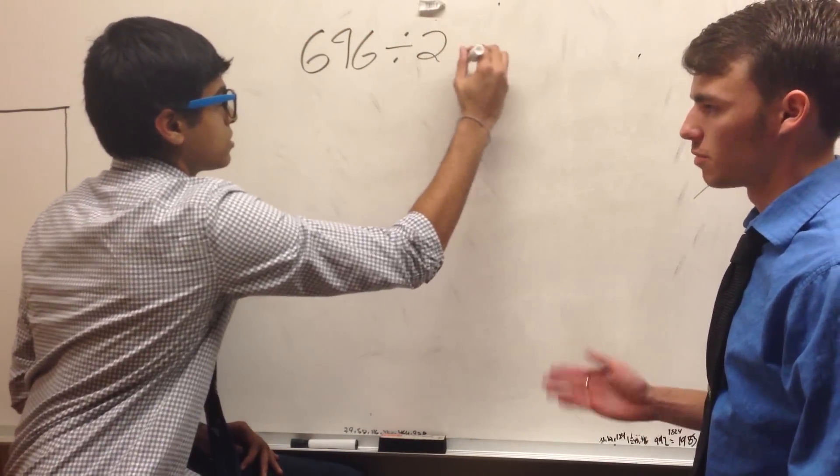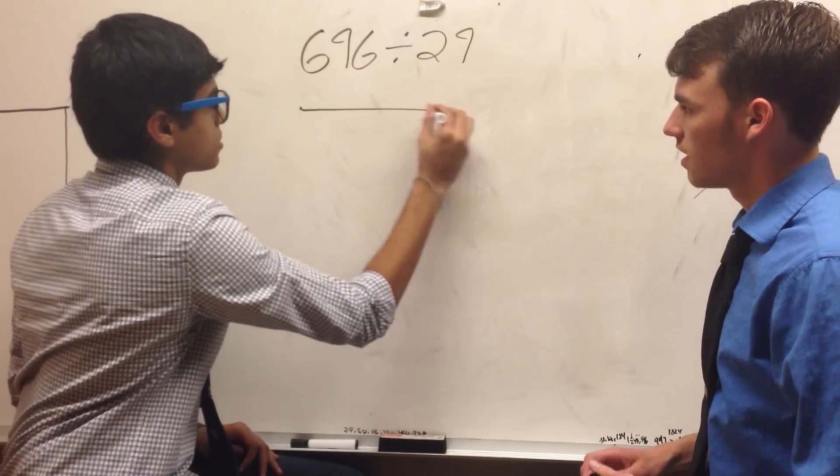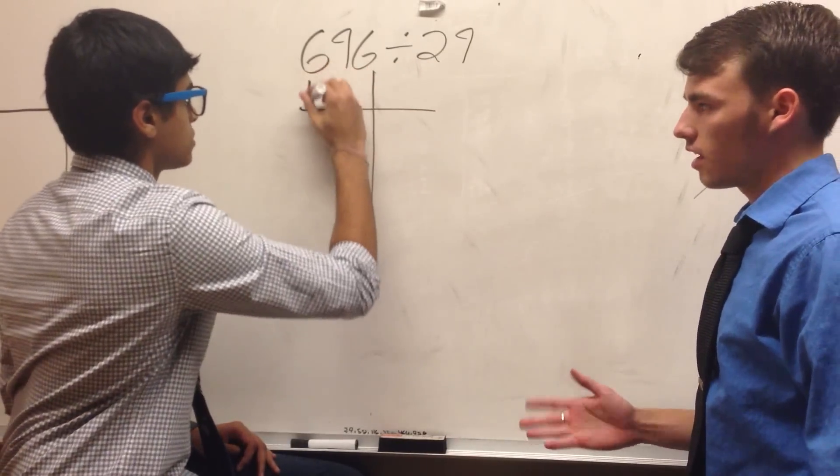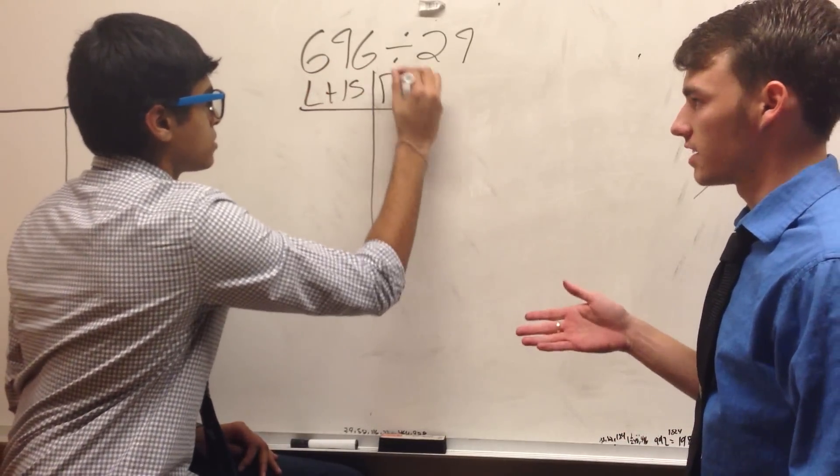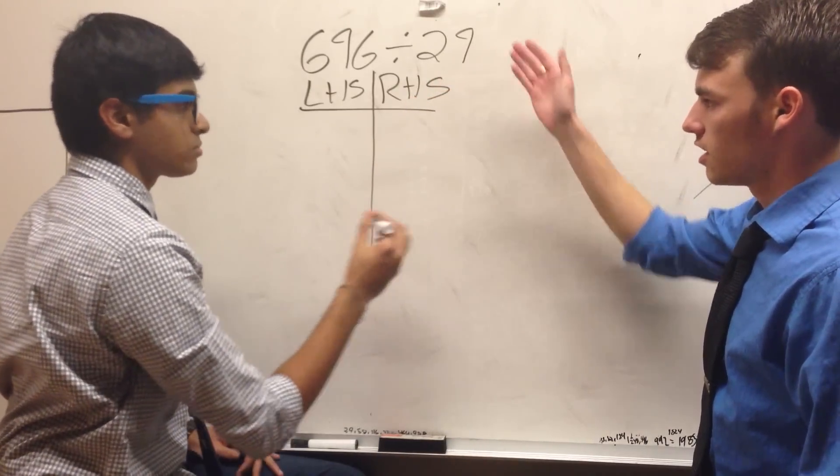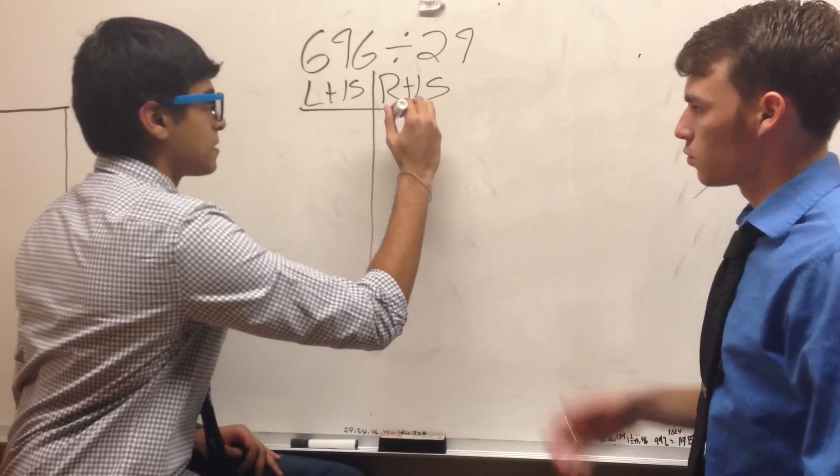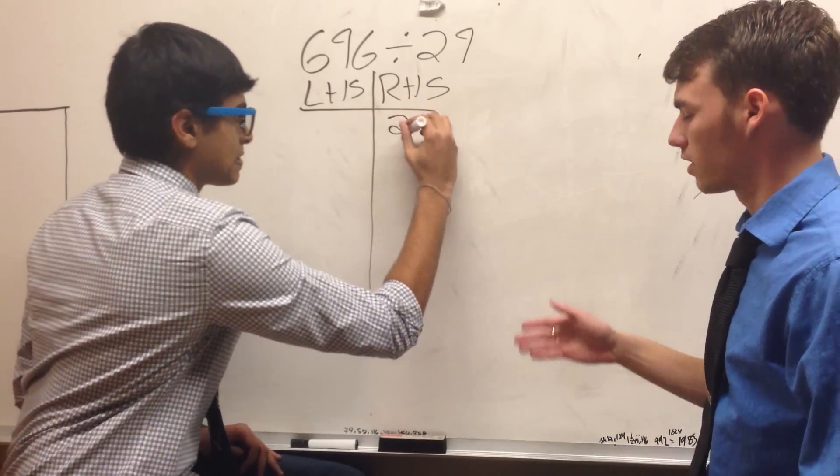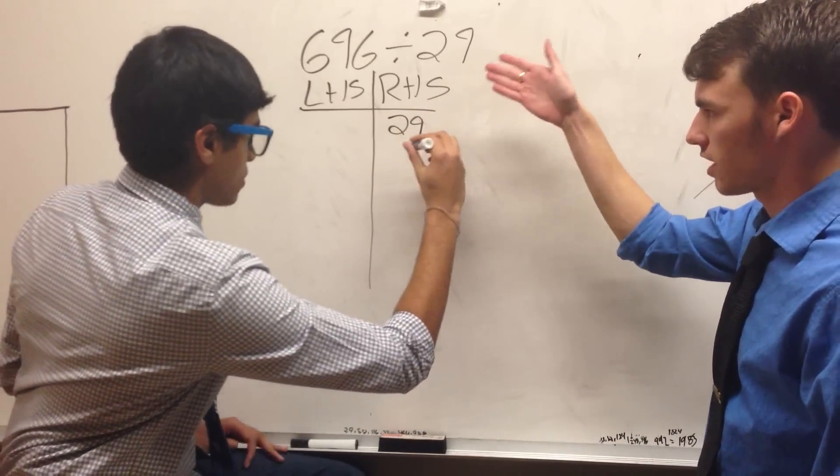We'll make another two-column approach of left-hand side and right-hand side. This time, we're going to start with our right-hand side with the number we're dividing by, 29. We start with 29 and keep doubling until we get to a number larger than our divisor, 696.